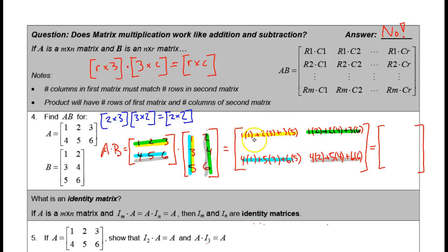Computing the results: 1+6+15 = 22; 2+8+18 = 28; 4+15+30 = 49; and 8+20+36 = 64. Matrix multiplication is tricky and tedious — you have to remember the pattern of how the rows and columns match up. Your calculators are really efficient at matrix arithmetic: addition, subtraction, scalar multiplication, and matrix multiplication. It's a great way to check your answers.